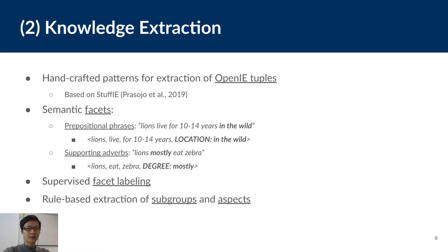So, after collecting relevant documents for the concept, we go into the extraction phase. The core of this phase is the open information extractor, which builds upon an approach called STUFFY. STUFFY is basically a series of handcrafted patterns that is capable of extracting open assertions with semantic facets from free text. The facets come from two sources, prepositional phrases and supporting adverbs.